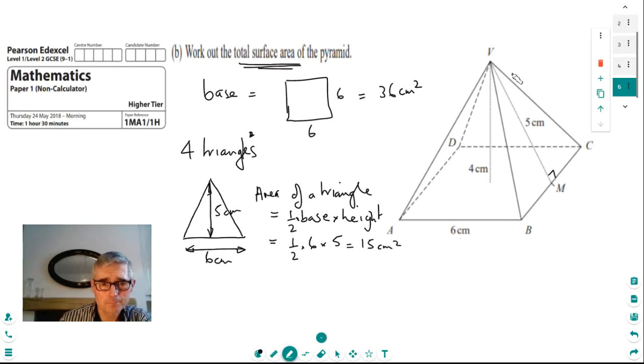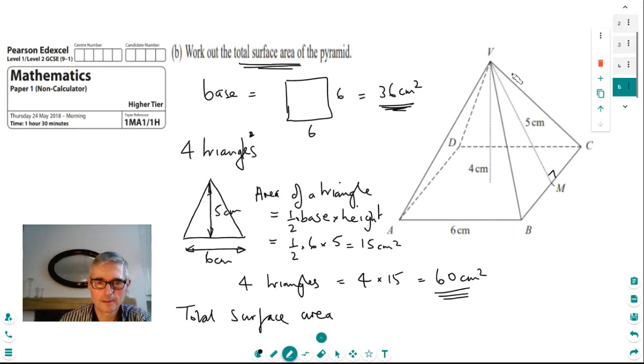Because we've got four of them, then what we have four triangles is four times 15, which is 60 centimetres squared. And so we can just find the total of it now by adding the 36 and the 60. So the total surface area is 36 plus 60 equals 96 centimetres squared.